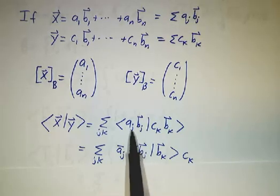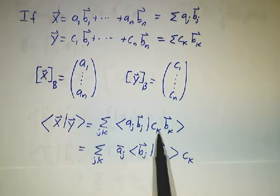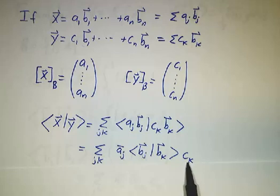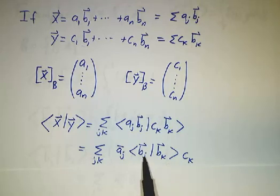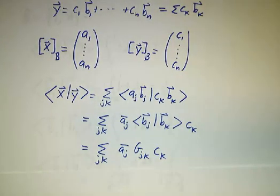Remember, when you pull an a_j out, you have to conjugate it. When you pull a c_k out, you don't have to conjugate it. And the inner product of b_j with b_k is precisely g_jk. So we've got a sum of a_j bar, g_jk, c_k.